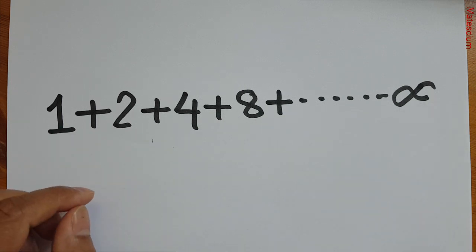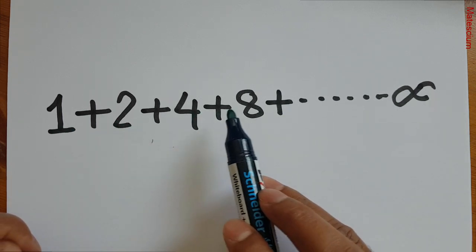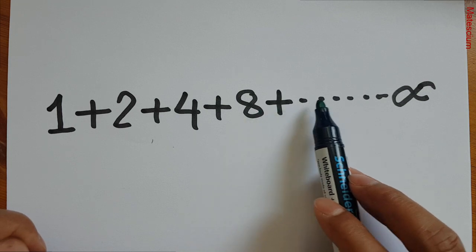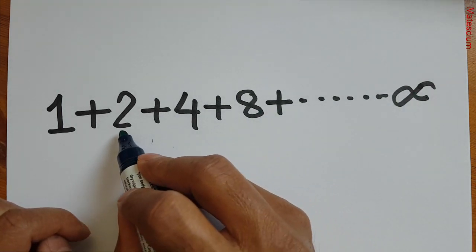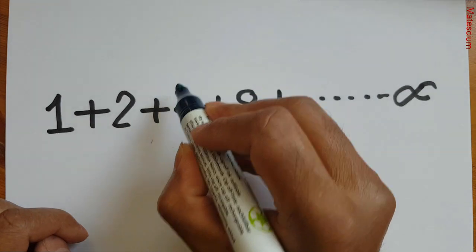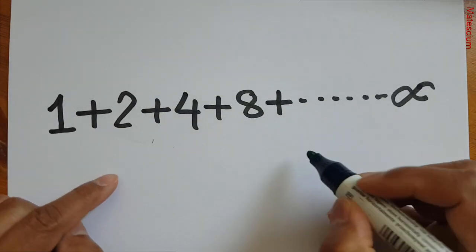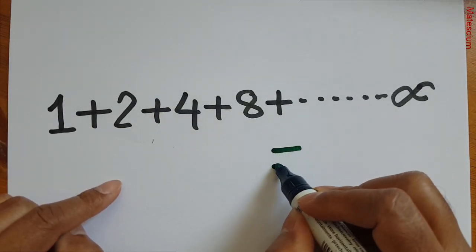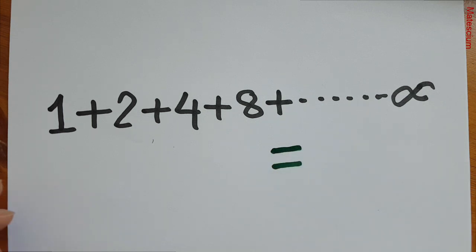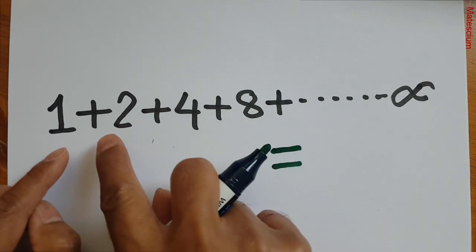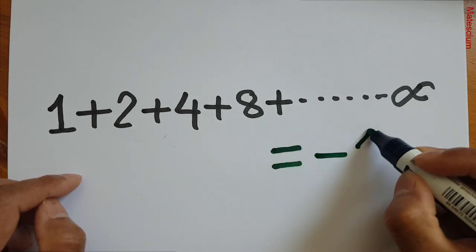This infinite series contains the natural numbers 1 plus 2 plus 4 plus 8 and up to infinity. Interestingly, each number is double its predecessor. If we sum all those numbers up to infinity, no computer can calculate it because it's an infinite series with no ending. But would you believe if I say the summation of this infinite series is equal to negative 1?